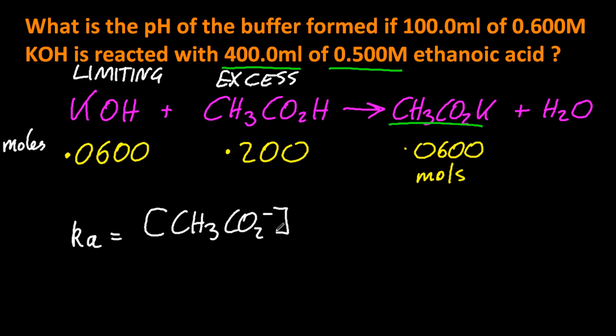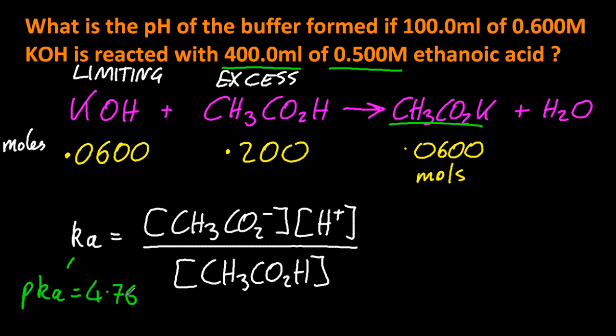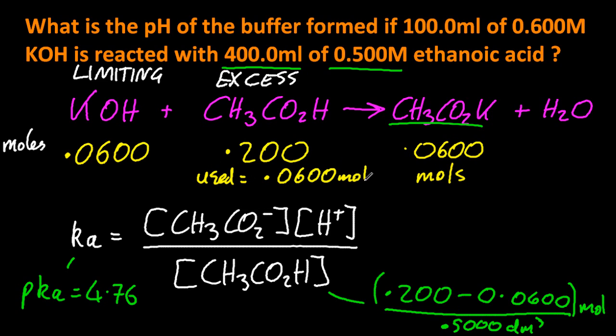So let's write out Ka, which is, again, products over reactants for the acid. Ignoring the H+, it's small compared to the concentration of the acid. Data booklet gives me pKa, which I can easily convert to Ka. And here's a little trick. You can't just say the concentration of the acid is half a molar. Some of it's reacted. So do moles over volume. Now, how many have I got remaining moles? 0.2 minus 0.06. That's how many moles I have at the end. And divide that by 0.5 decimetre cubed.